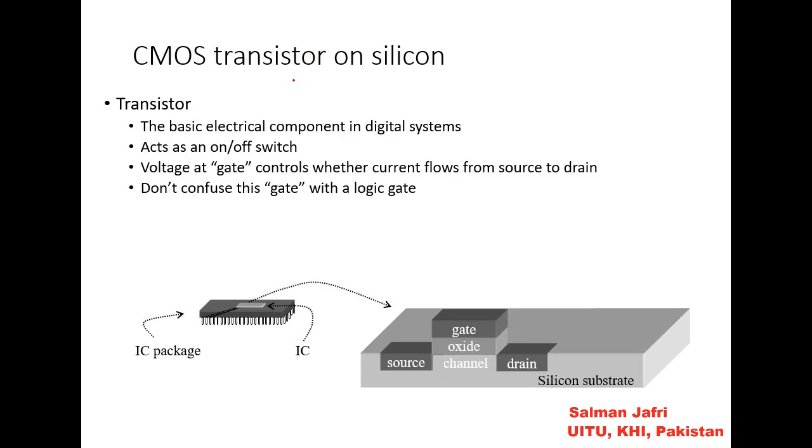First of all, we look at the basic building block which is a transistor—CMOS complementary metal oxide semiconductor transistor on silicon. It is the basic component of digital systems and it acts as an on-off switch. It can work as an amplifier and it can also work as an on-off switch. In electronics, in computer electronics, we use it as an on-off switch. Voltage at the gate controls whether current flows from source to drain. This is basically the source, this is the drain, and this is the gate. It is basically an FET arrangement, field effect transistor arrangement. All these transistors are packed into this IC which is placed over here, and this is basically the IC package.